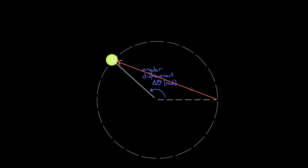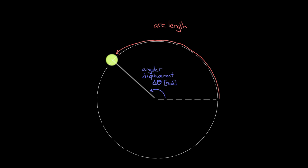There's a much more useful quantity that tells you how far the ball went: the arc length — the path the ball traced out around the circle. The arc length, denoted S (though some use L), is much more useful and much easier to find than that regular displacement.